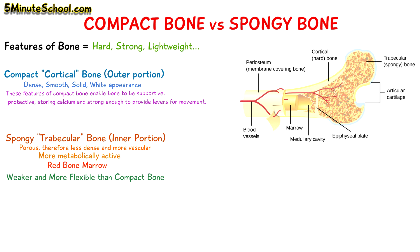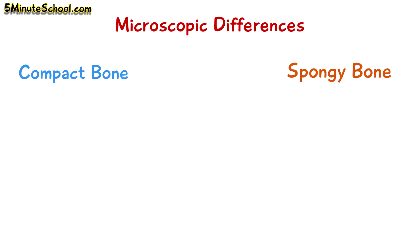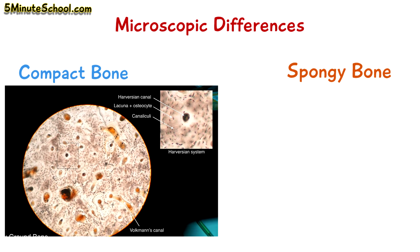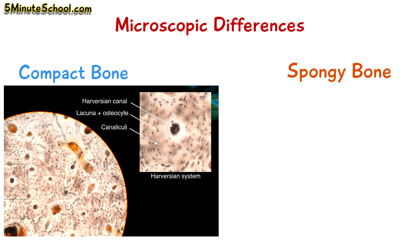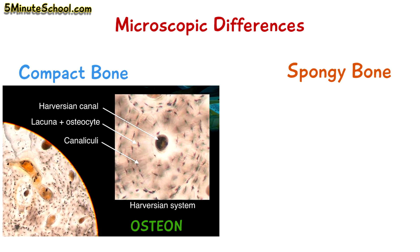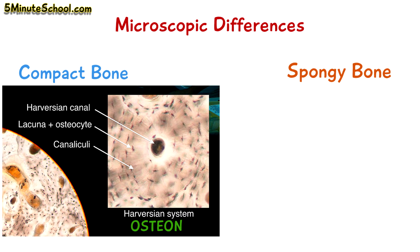Now that we've discussed the main features of compact and spongy bone, let's talk about the microscopic differences between the two. If we look at compact bone and spongy bone through a microscope, we'd be able to see that the arrangement of cells is very different. Compact bone has a special arrangement in multiple microscopic columns called osteons, and these groups of osteons together make up compact bone.